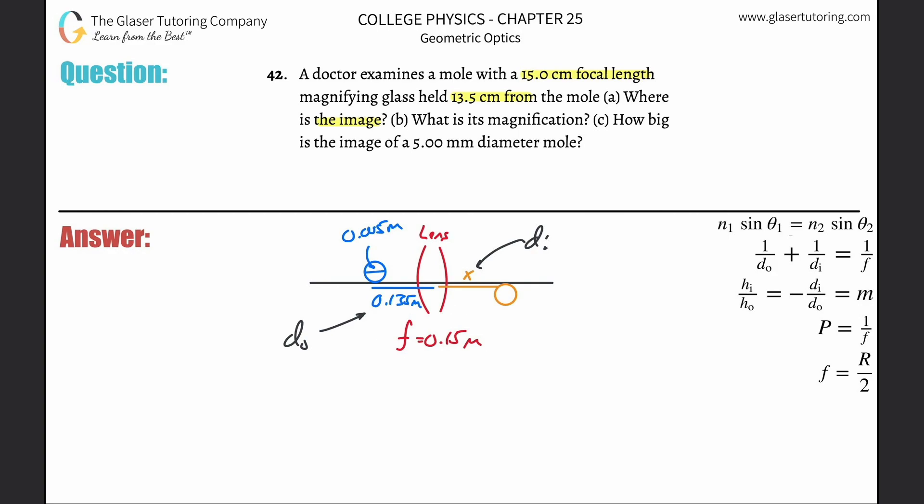So we can use the lens equation: one over do plus one over di equals one over f to solve for di. Subtract this term over to the right hand side, and then what you have to do is basically cross multiply this on out. This whole thing comes down to the bottom and I'm just going to make this a little cleaner. Then this is all over one. That's now the formula for the image distance.